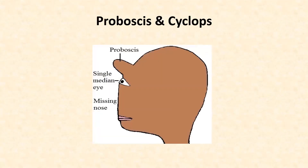Next is proboscis and cyclops. In proboscis, there is a cylindrical projection of the nose located just below the forehead. This is usually associated with cyclops, where there is a single median eye. Proboscis, cyclops — that is, a single median eye — and missing nose are features of this congenital anomaly, and they are often seen together.